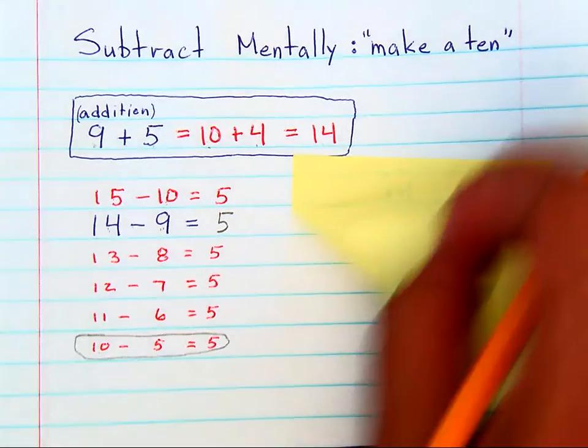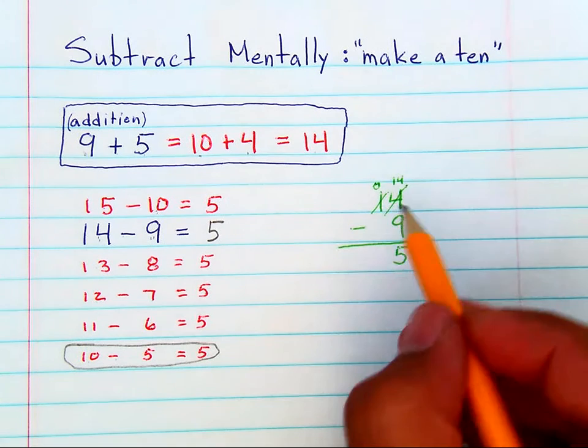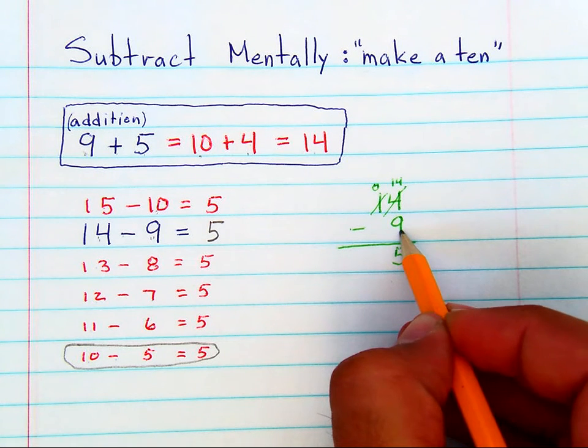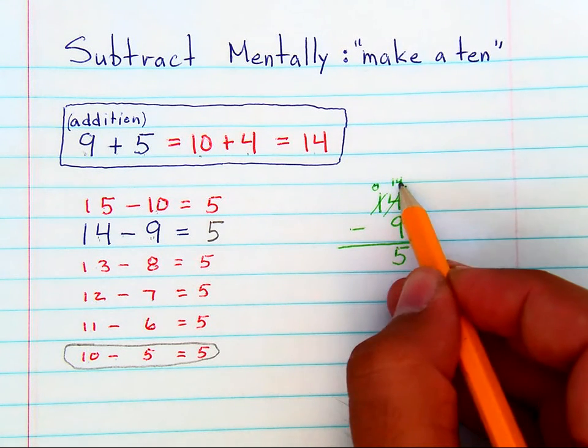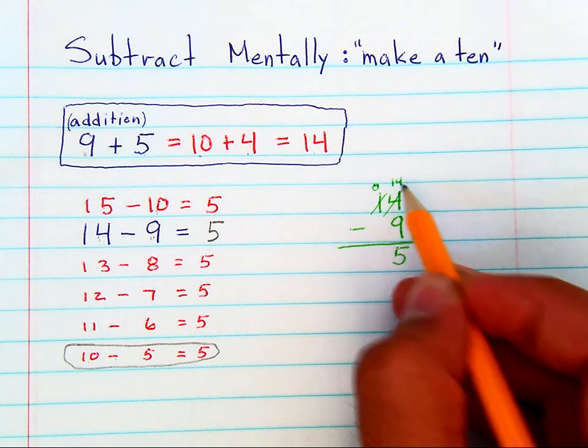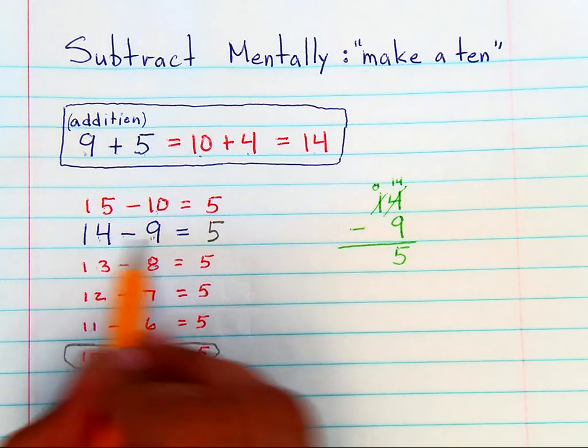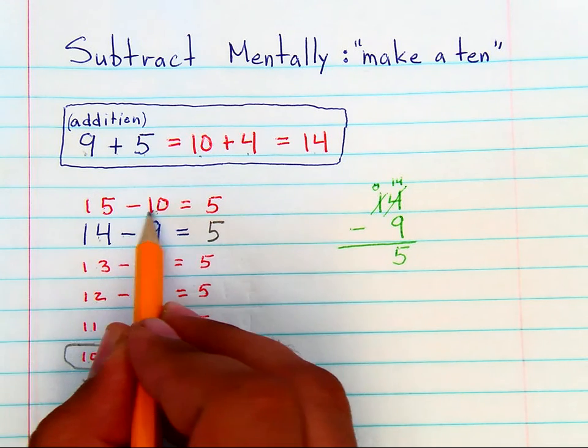So instead of only knowing the standard algorithm, 14 minus 9, where you borrow from the 10s and you give it to the 1s, you can simply know how to make a 10 that's easier to work with.